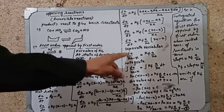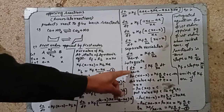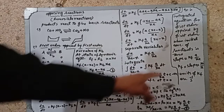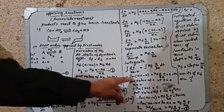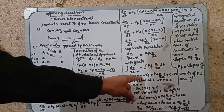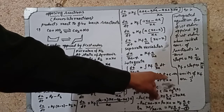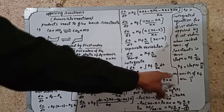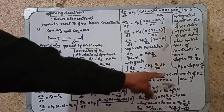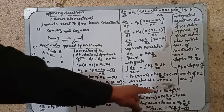Separating variables: dx/(xe minus x) equals kf·a/xe·dt. Integrating both sides: the integral of dx/(xe minus x) equals integral of kf·a/xe·dt. Since xe is constant, this gives minus ln(xe minus x) equals kf·a/xe·t plus c. To find the integration constant c, at t equals 0, x equals 0: minus ln(xe) equals c.